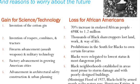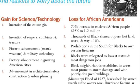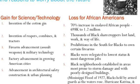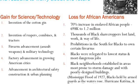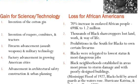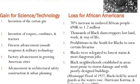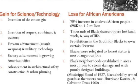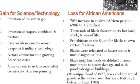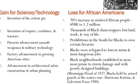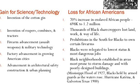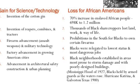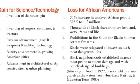Firearm advancement — specifically assault weapons and military technology — came with prohibitions in the South on Black ownership of certain firearms, placing weapons in the hands of one group but not others. Factory advancement and growing American cities relegated Blacks to the lowest-status and most dangerous jobs. Advancement in architectural safety, urban planning, and construction was a gain for some, but in Black neighborhoods established in areas most prone to storm damage, buildings were often poorly designed. In the Mississippi flood of 1927, Blacks were held by armed guards as the waters rose and were not allowed to leave.